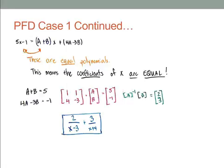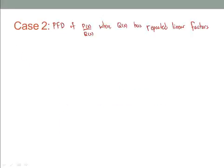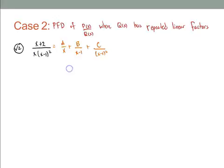Feel free to pause and review. Case 2 is a partial fraction decomposition where q(x) has repeated linear factors. For example, with x minus 1 squared in the denominator — which makes the whole denominator cubic — I set up fractions for every power of each repeated factor: A over x, B over (x minus 1) to the first power, and C over (x minus 1) squared. Every partial fraction must represent every single power of every single term in the denominator.